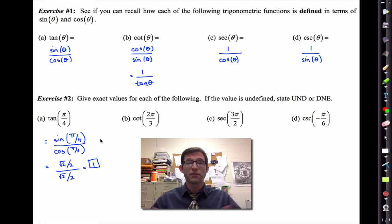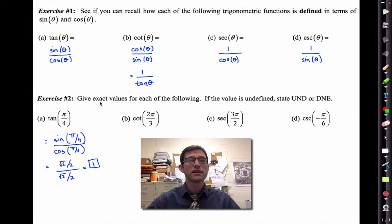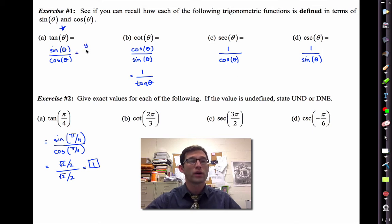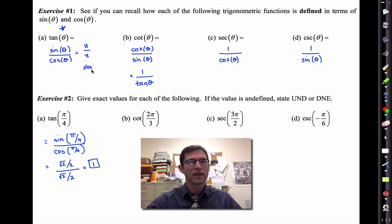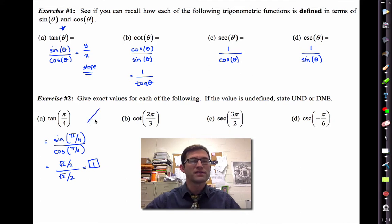I would highly suggest knowing off the top of your head that the tangent of pi over four is equal to one. One of the really amazing things about tangent is that it really is just the y-coordinate on the unit circle divided by the x-coordinate. What this really means is that the tangent is the slope of a line at a particular angle. So if you think about a line that is at an angle of pi over four, it has a slope of one.